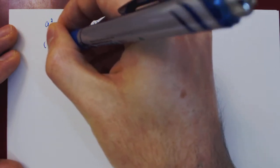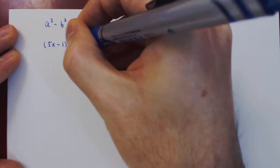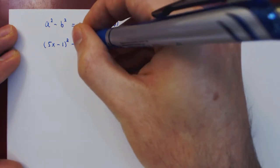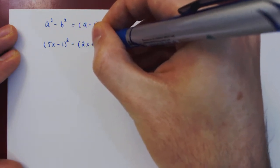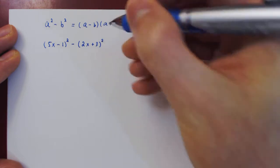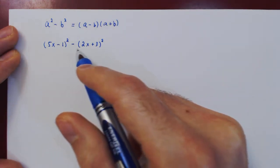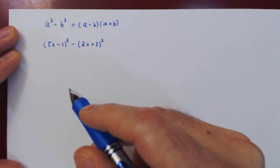So let's now look at something more interesting. Suppose that we are considering 5x minus 1 squared minus 2x plus 3 squared, and that we want to simplify this given polynomial by factoring as much as possible.